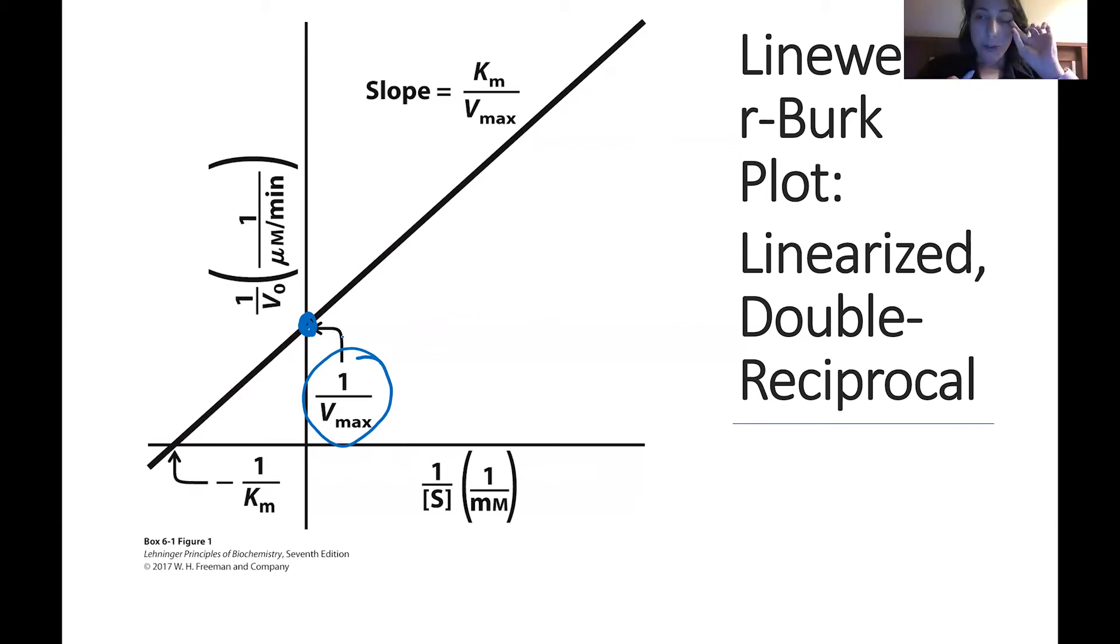The Km can also be calculated from this plot in a different way, and it is where the x-intercept is. So again, where their linear line hits the x-intercept, this is negative 1 over Km. So if you find the x-intercept, if x equals negative 1 over Km, you can then rearrange to solve for just your Km. Now the whole slope of this line also is utilizing the two parameters. The slope is Km over Vmax, so you could also calculate the slope and find information that way as well.